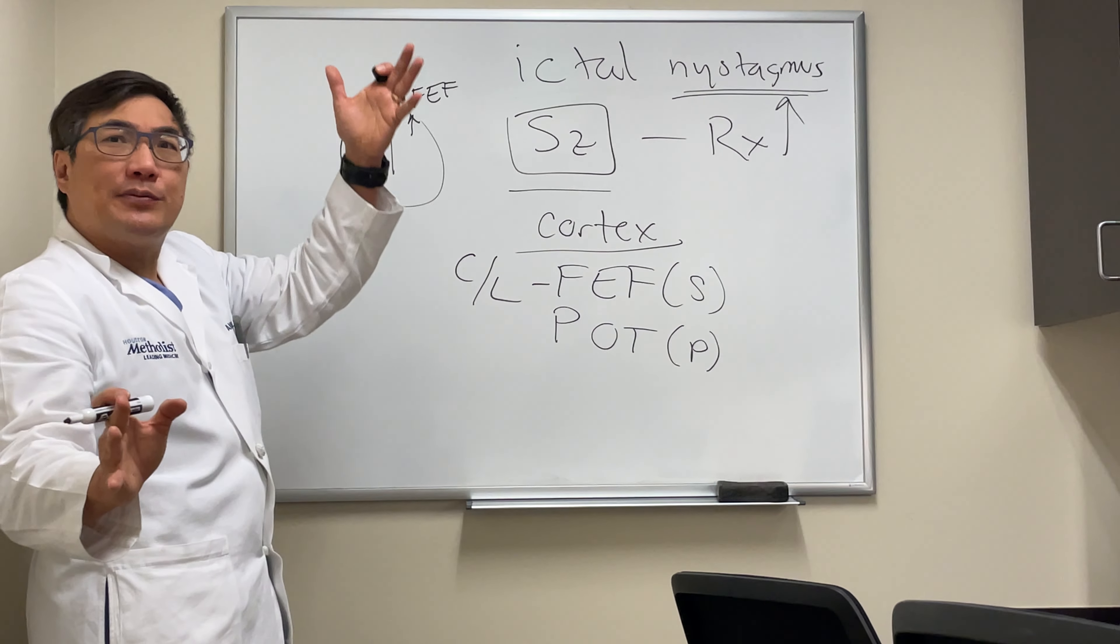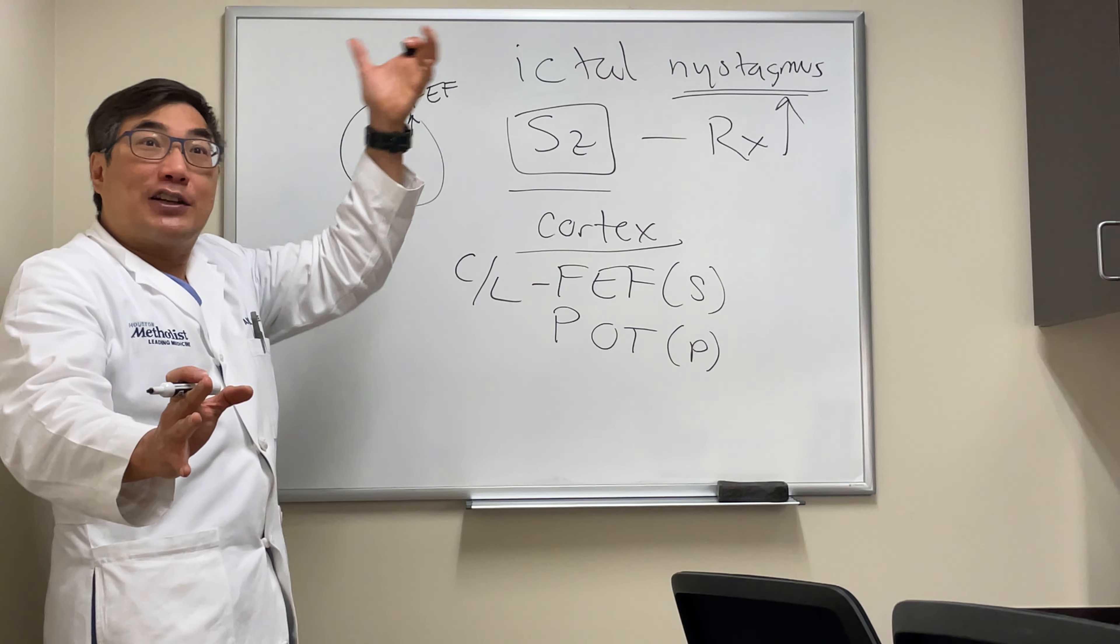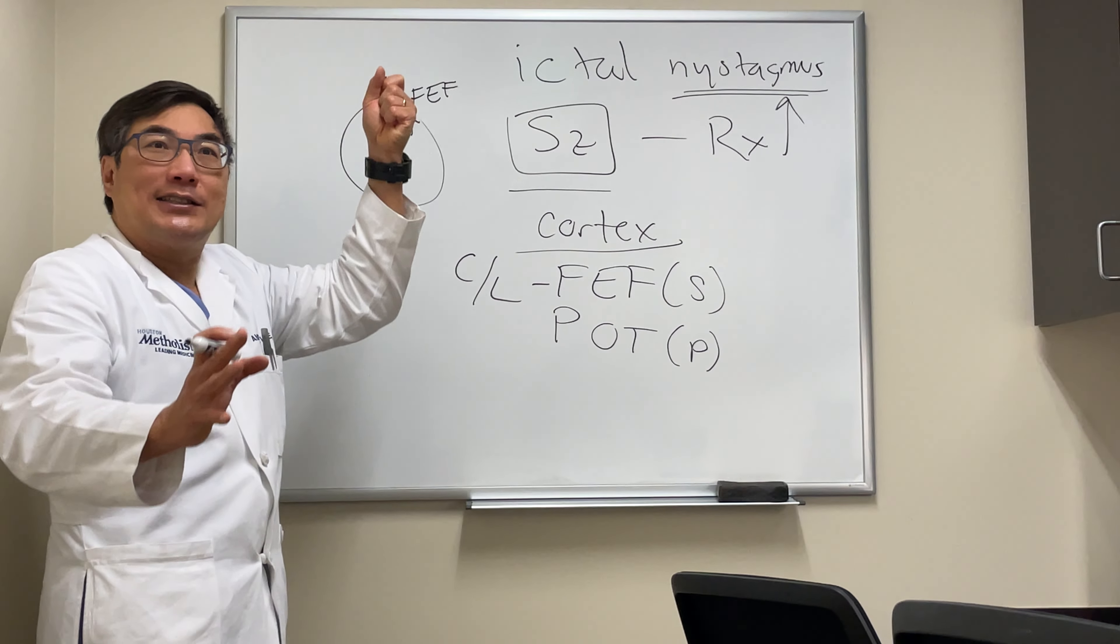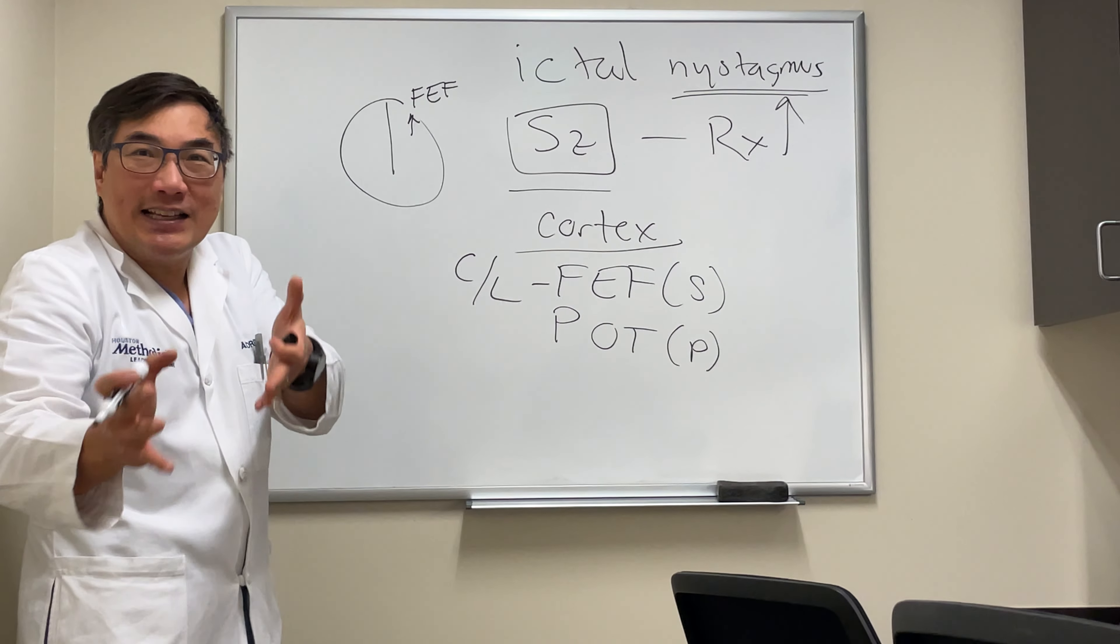If I want to look to the right, it's my left frontal eye field that's actually firing. Therefore, if you have electricity in your left frontal lobe, that's an irritative lesion that will drive the eyes to the right. So you'll get a gaze deviation.